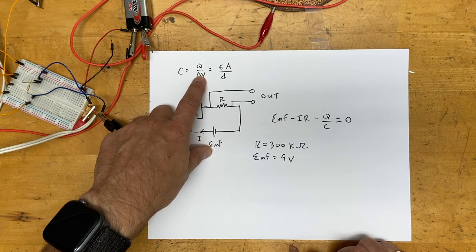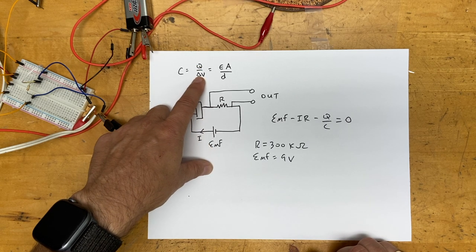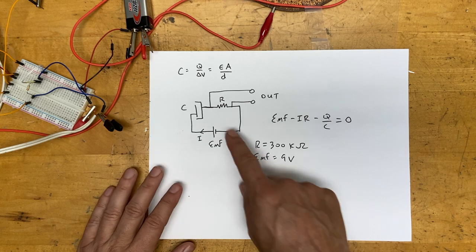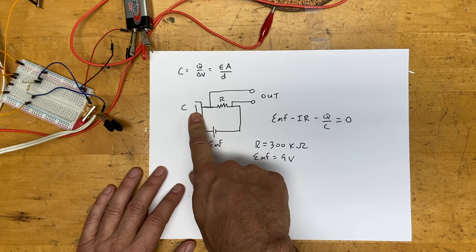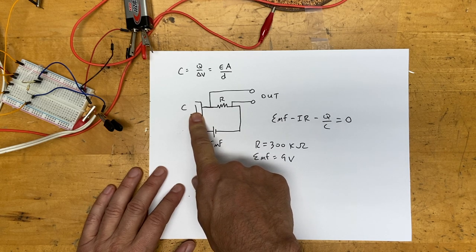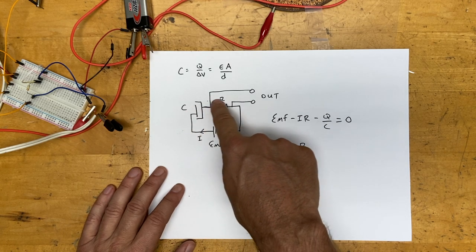The capacitance also depends on the charge and the change of potential. Here's the circuit that we have: a very simple circuit consisting of a battery, a homemade capacitor, and a resistor.